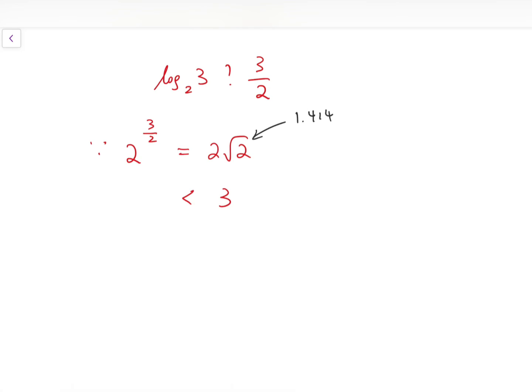So then you know that 2 to the power of 3 over 2 is less than 3, and hence we can say that log base 2 of 3 must be larger than 3 over 2, because the power needed for 2 to equal 3 must be larger than 3 over 2.